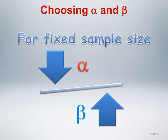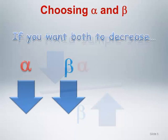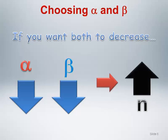This increases the importance of considering which of the two errors are more serious to commit. If you want to ensure that both the alpha and beta error rates remain low, then you need to increase the overall sample size of the study.